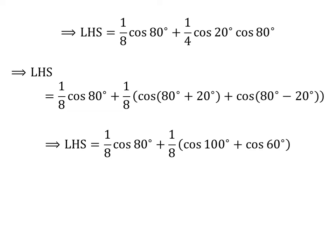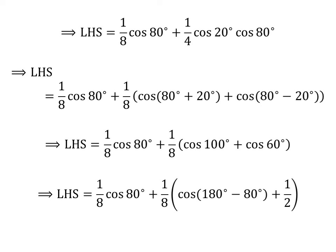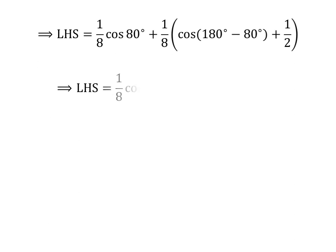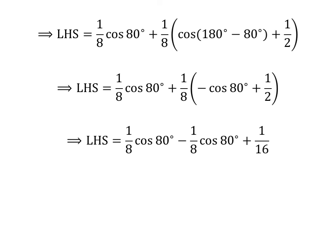Further simplification gives us left hand side equals 1 upon 8 times cosine of 80 degrees plus 1 upon 8 times cosine of 100 degrees plus cosine of 60 degrees. Now, 100 degrees can be written as 180 degrees minus 80 degrees, and we plug in the value of cosine of 60 degrees. We know cosine of (180 degrees minus 80 degrees) is equal to minus cosine of 80 degrees. So left hand side equals 1 upon 8 times cosine of 80 degrees minus 1 upon 8 times cosine of 80 degrees plus 1 upon 16.